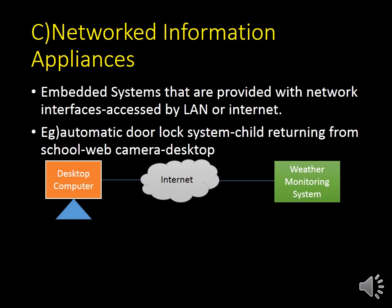The next one is networked information appliances. Networked information appliances means through the internet, LAN, or WAN, we can communicate. For example, a desktop computer monitoring the weather through the internet — the data is taken from a weather monitoring system through the internet to the desktop computer. The best example is an automatic door lock system: if a child is returning from school and the parent is working at the computer, the parent can see who is standing at the door through a web camera and automatically open the door from the desktop.